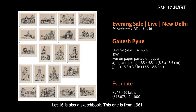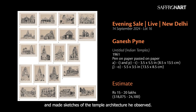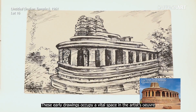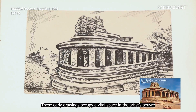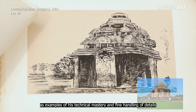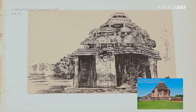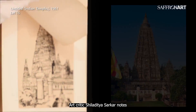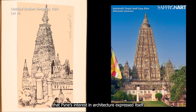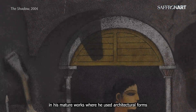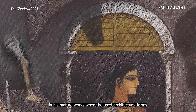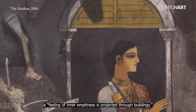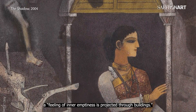Lot 16 is also a sketchbook, this one from 1961 — the year he took a trip to Orissa after graduating from college and made sketches of the temple architecture he observed. These early drawings occupy a vital space in the artist's oeuvre as examples of his technical mastery and fine handling of details that would go on to characterise his later paintings. Art critic Sheila Dadyasharkar notes that Pine's interest in architecture expressed itself in his mature works, where he used architectural forms as visual metaphors and where a feeling of inner emptiness is projected through buildings.